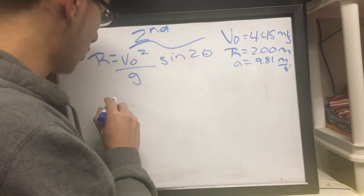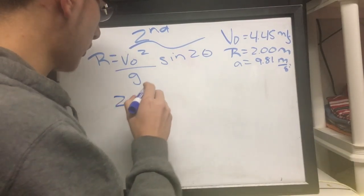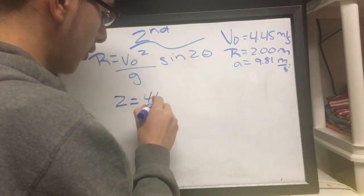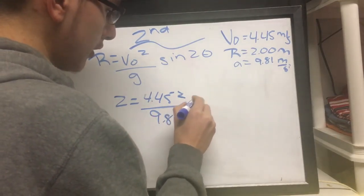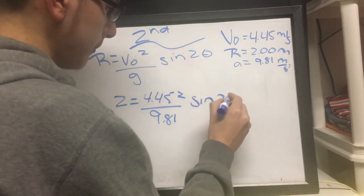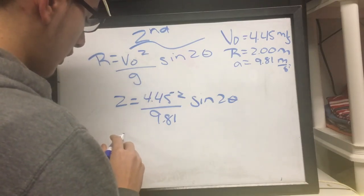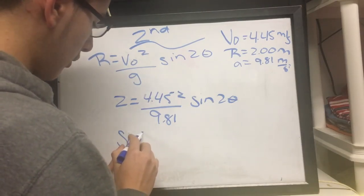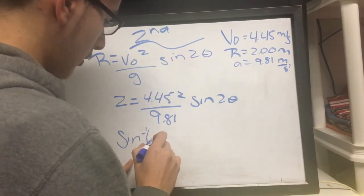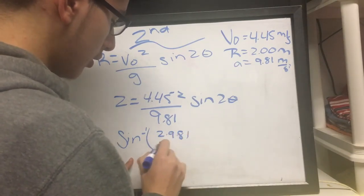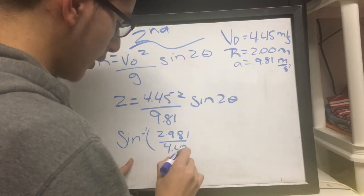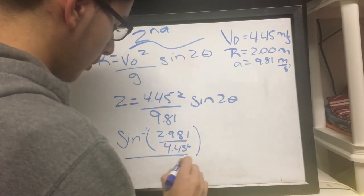So since the range is 2 meters, so 2 equals 4.45 squared over 9.81 equals your sine 2 theta.